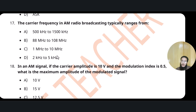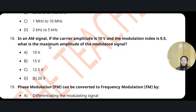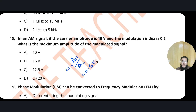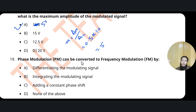The carrier frequency range for AM radio broadcasting is 500 kHz to 1500 kHz. Question: In an AM signal, if the carrier amplitude is 10 V and the modulation index is 0.5, what is the maximum amplitude of the modulating signal? Modulation index = AM / AC, so AM = 0.5 × 10 = 5 V. Option A is the correct answer (note: the option had a typo, write 5 V).